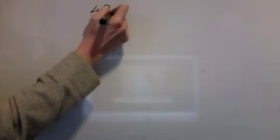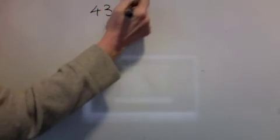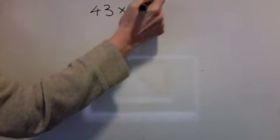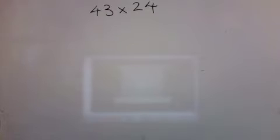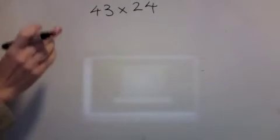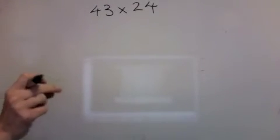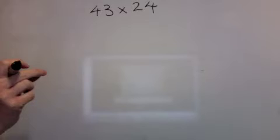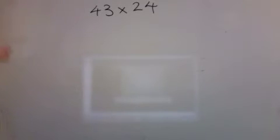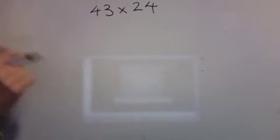Multiplication level 8. 43 times 24. What we're going to do now is add together the two new ways we've learned of multiplying and put them all together in one sum. So this is how it will go.